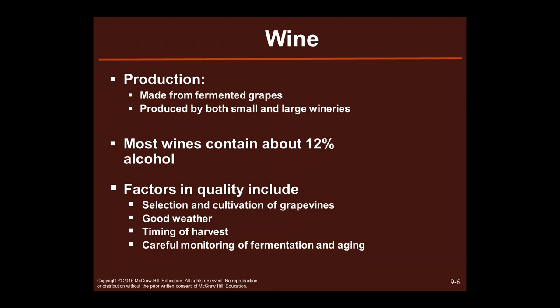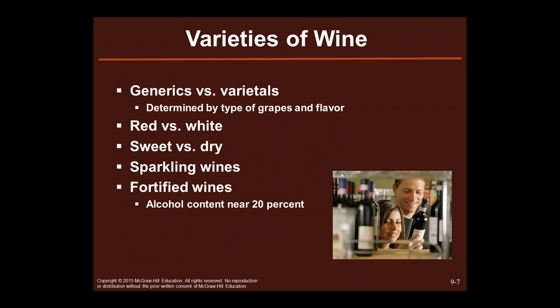Also, at my college you could major in wine management. Now, varieties of wine: you've got your generics versus your varietals, determined by the type of grape and the flavor. You have red versus white, sweet versus dry, sparkling wines — which are not supposed to be called champagne unless they come from Champagne — and fortified wines, which tend to have higher alcohol contents. Rosé wines tend to be red grapes that have been peeled.